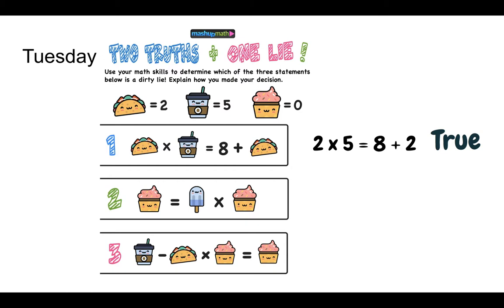The second one, cupcake is 0, equals popsicle times 0. Now, this one is a little tricky because they don't tell us how much the popsicle is worth. But you'll notice that because of the 0 property of multiplication, it doesn't matter what that number is. The answer is always going to be 0. So that's true.